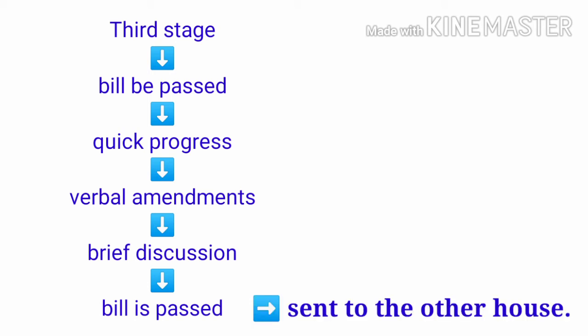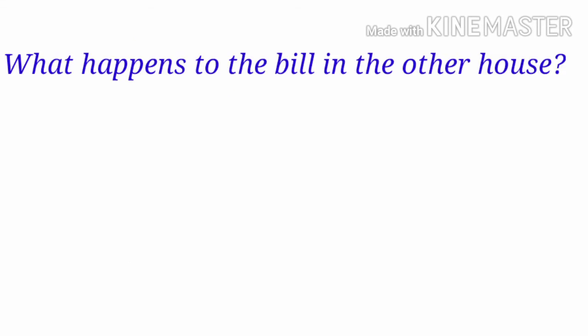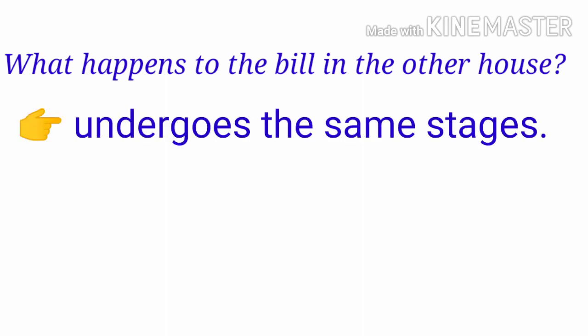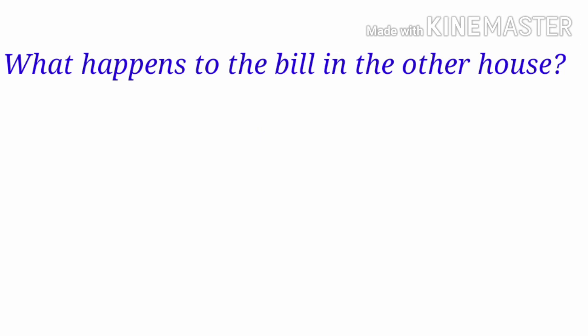After this, it is transmitted to the other House for its consideration. When the bill comes up for consideration by the other House, it has to undergo all the same stages as in the originating House. There are three options before that House.